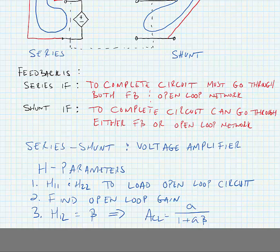We could further find input and output impedances by finding the input and output impedance of the open loop circuit and modifying them according to the type of connection at the input or the output.